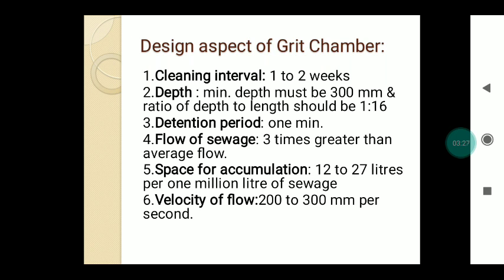The next parameter is that the flow of sewage should be about 3 times greater than the average flow. Next is space for accumulation — about 12 to 27 liters per million liters of sewage — meaning sufficient space must be provided for storage or accumulation. The last parameter is the velocity of flow, which should be 200 to 300 mm per second.